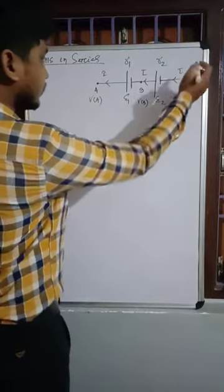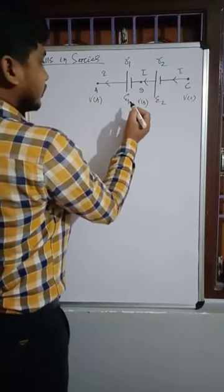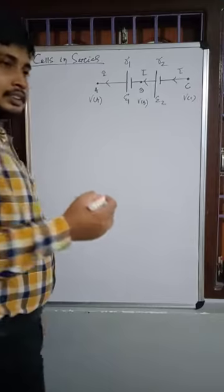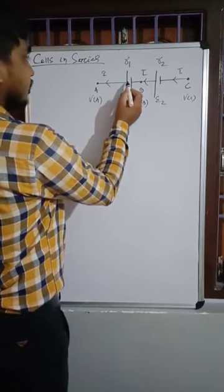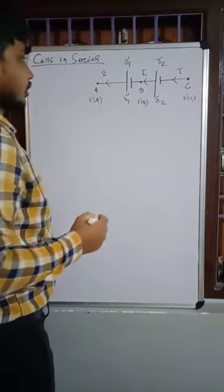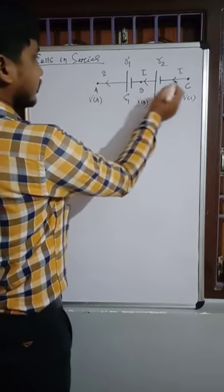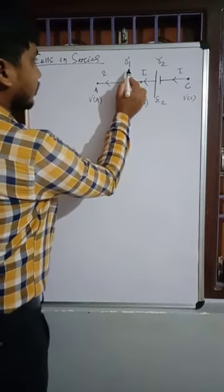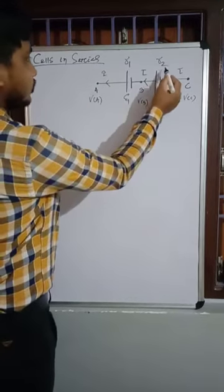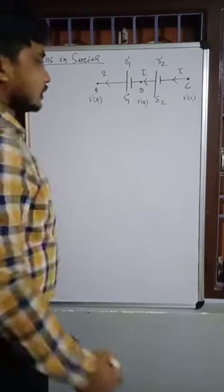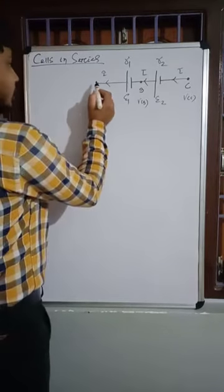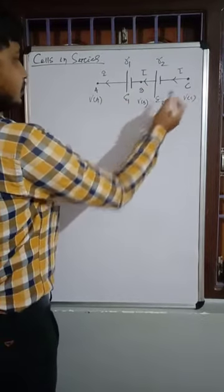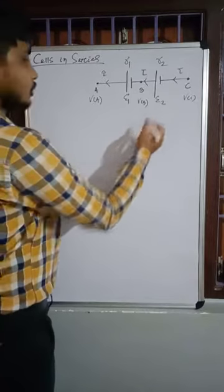Here we have taken two cells, each having EMF E1 and E2. They are connected in series. Series connection means one terminal of a cell is connected to the other terminal. Let I be the current flowing through the cells. R1 is the internal resistance of the first cell and R2 is the internal resistance of the second cell. We have three points A, B, and C, and across these three points, two cells E1 and E2 are connected.